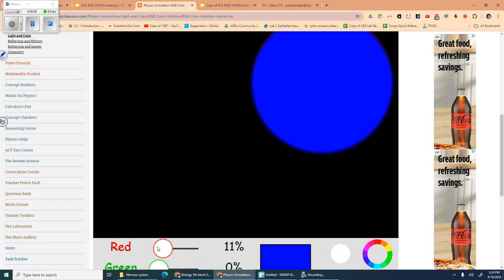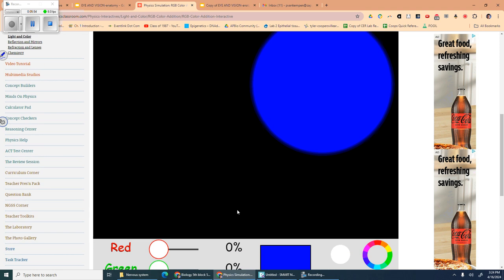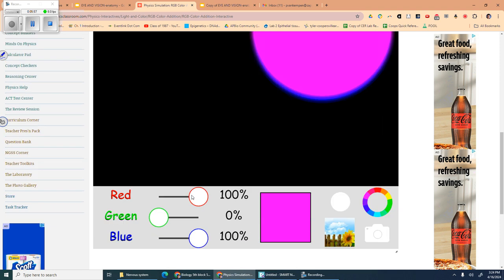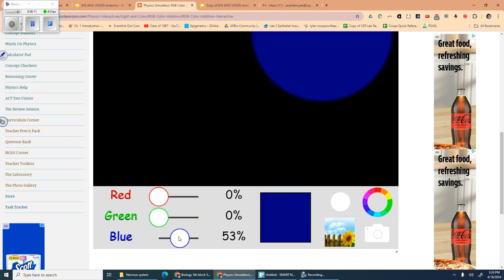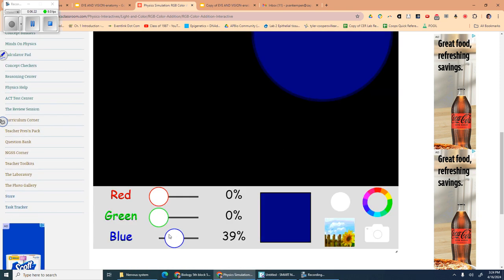Is it possible for people to be just green colorblind? Sure, so these people will see the world in shades of red and blue. It is possible to be just missing blue. The most common however is red-green colorblind. People are missing red and green, and they see the world in shades of blue.